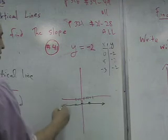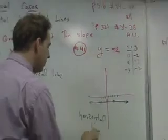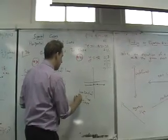So this is a horizontal line. It's slope zero. Or zero slope.